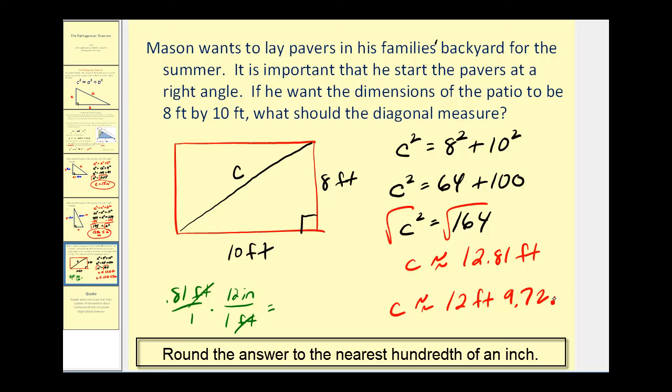0.72 is very close to 0.75, which would be three-fourths of an inch. So Mason can get a very good indication what this length has to be with a tape measure if he wants this to be a right angle.